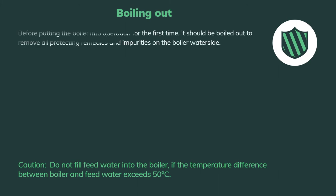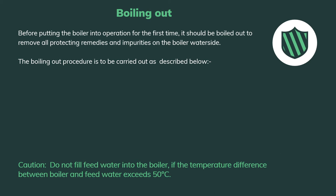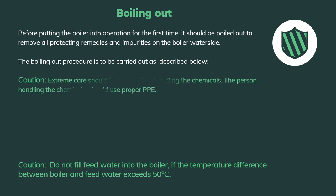Boiling out — before putting the boiler into operation for the first time, it should be boiled out to remove all protecting compounds and impurities on the boiler water side. This is done during commissioning of the boiler. Extreme care should be taken while handling the chemicals — the person handling them should use proper PPE.